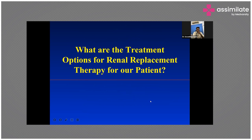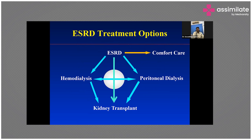When ESRD is reached, there are three modalities of treatment: hemodialysis, peritoneal dialysis, and kidney transplantation, plus palliative or comfort care. Contraindications for hemodialysis include inability to travel to center, patient immobility, and lack of willingness on the part of the patient or family, which is a relative contraindication.